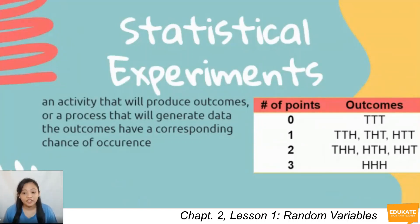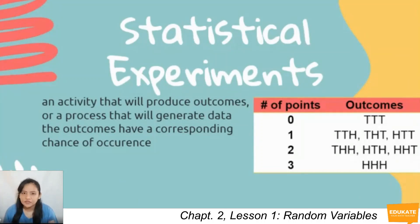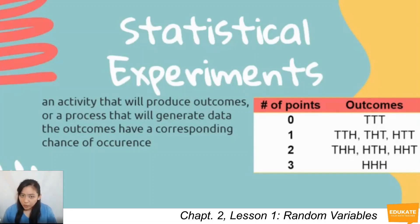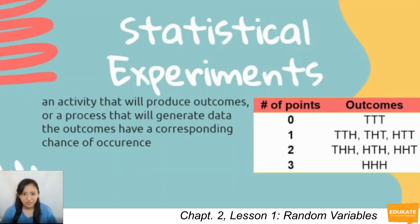In the breath-holding activity, the results may be as follows: 60 seconds, 64 seconds, 58 seconds. Notice that in the coin toss activity, the number of outcomes can be listed. However, for the breath-holding activity, the outcomes are unique to each individual. The data gathered from both activities are what we call random variables.